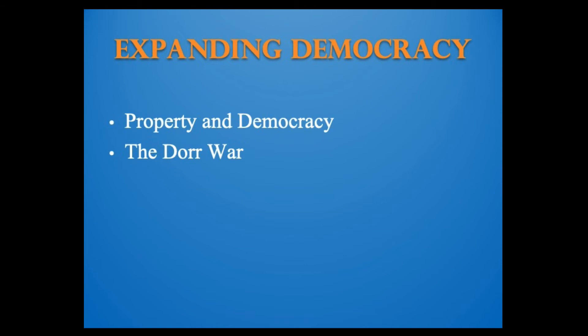The single exception to this democratizing trend was Rhode Island, which required voters to own considerable real estate or pay a certain amount of rent. The state was a center of factory production, and many wage earners could not vote. In 1841, reformers met at a People's Convention and drafted a new state constitution that gave the vote to all adult men but stripped it from blacks. When the convention extralegally ratified the constitution and inaugurated Thomas Dorr, a lawyer, as governor, President John Tyler dispatched federal troops to the state and the movement collapsed. The Dorr War demonstrated the passions aroused by exclusion of any white men from voting, and the legislature soon eliminated property qualifications for native-born men, both black and white. It was retained for immigrants until 1888.